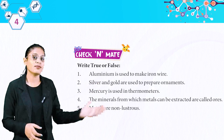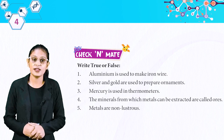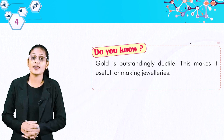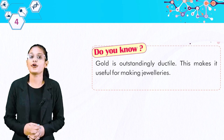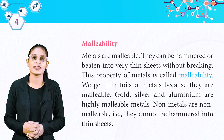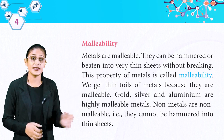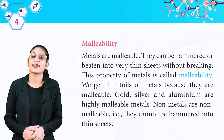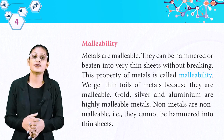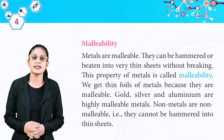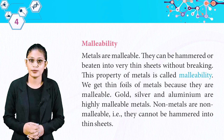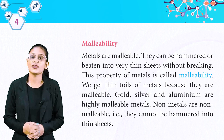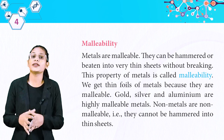Now we have a check-and-make exercise — you can do it by yourself as we already read about these things. Do you know? Gold is outstandingly ductile, which makes it useful for making jewellery. Here we have malleability. Metals are malleable — they can be hammered or beaten into very thin sheets without breaking. This property of metals is called malleability.